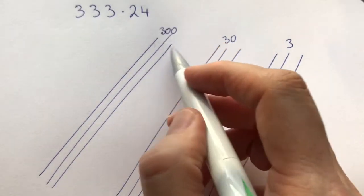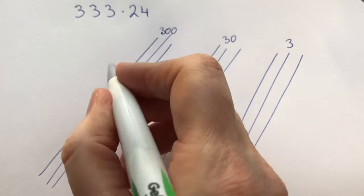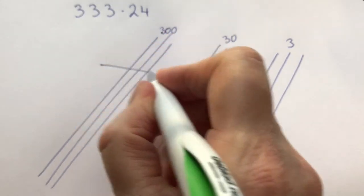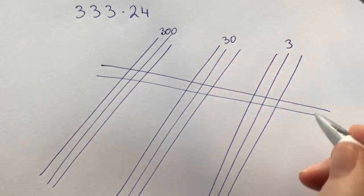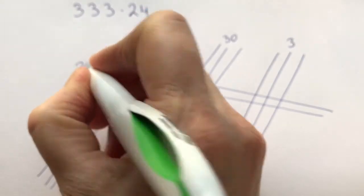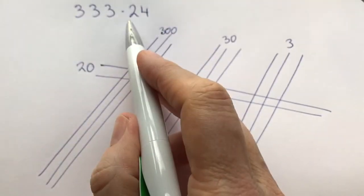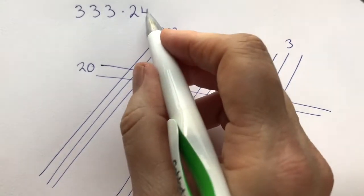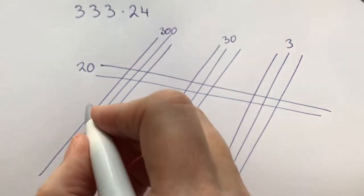Closest to our 300, we actually do two lines that represent our 20 — that's the 24. And then we do four lines that represent our four.